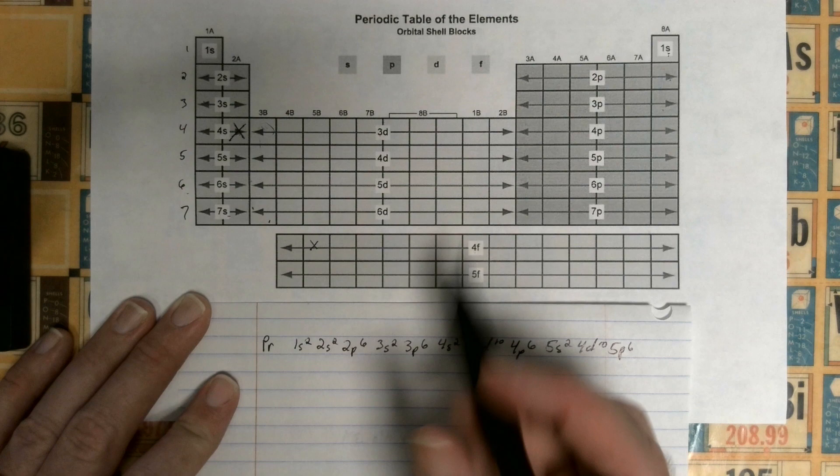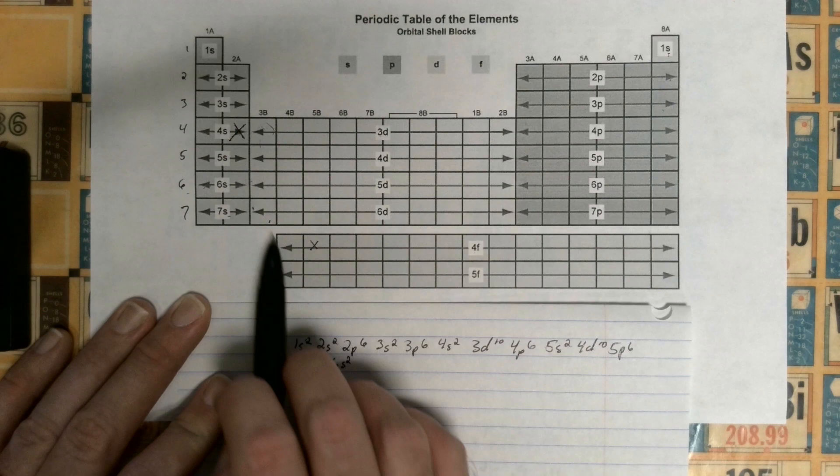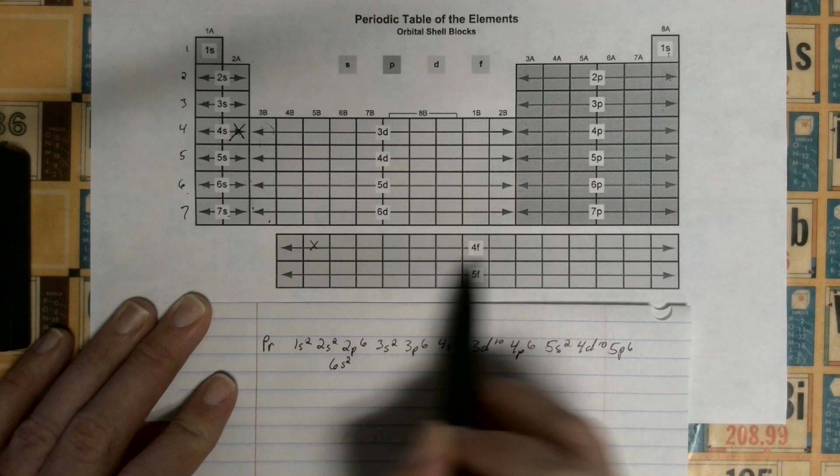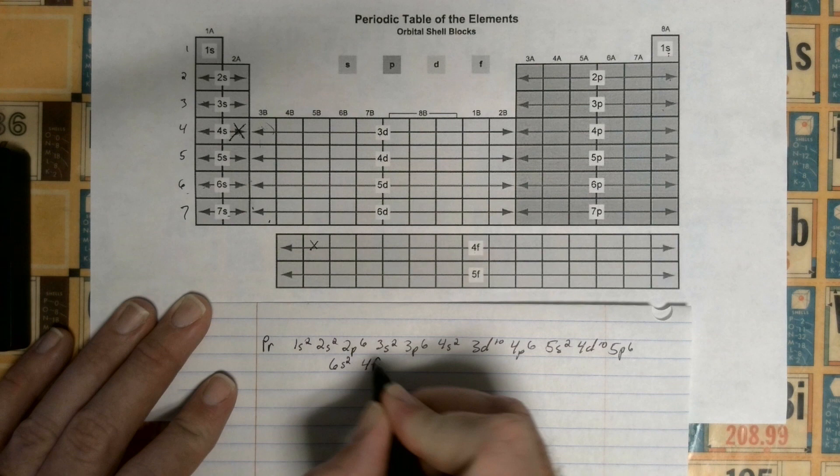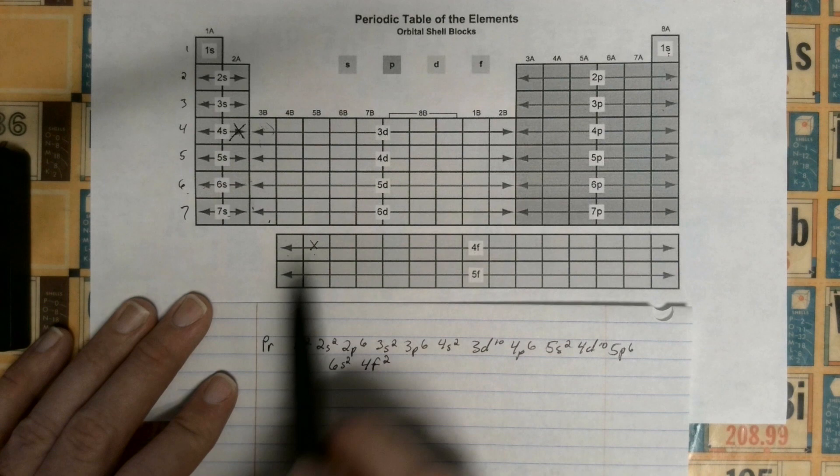Now we're on the sixth energy level, so then we go 6s2. Once you get through the 6s, we're going to drop down to 4f. If you look on a periodic table that has the atomic numbers, you'll notice there's a jump here between these two elements where it skips some numbers because those numbers are right here. So 6s and then we're going to go 4f2, and that would be where you stop because that's the element we're looking for.